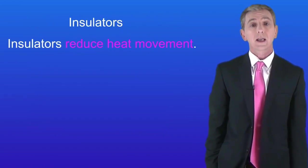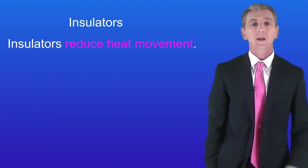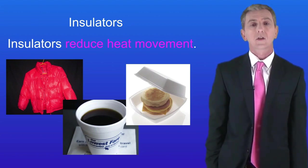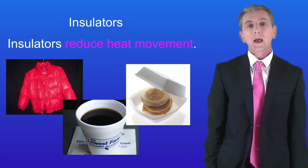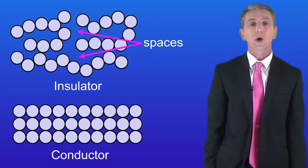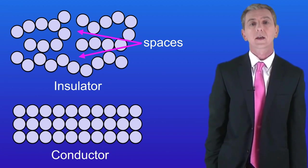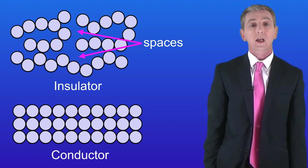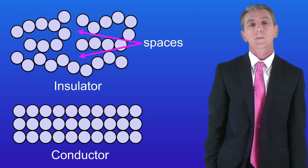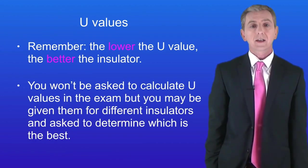So in this video we're looking at insulators. Insulators reduce heat movement. How do insulators reduce heat movement? It's all about the arrangement of particles. Insulators have large spaces between the particles and these spaces make it harder for vibrations to pass from one particle to another. This means that heat energy cannot easily pass through an insulator. The effectiveness of different insulators can be determined from the U value. Here's a key fact that you have to learn: the lower the U value, the better the insulator.